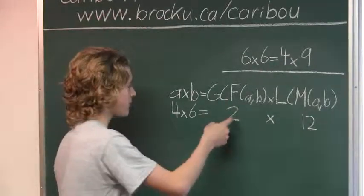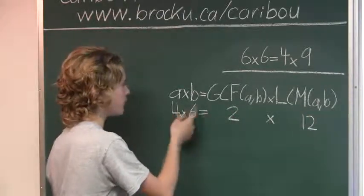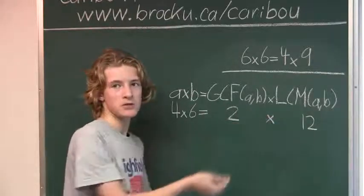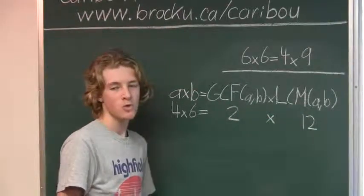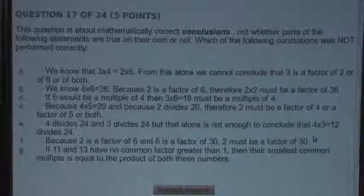Well, if the greatest common factor wasn't 2, but was 1, that means that the product would have to be just 1 times the lowest common multiple, which means that the lowest common multiple would just have to be the product of A and B. So that means that statement G is correct.